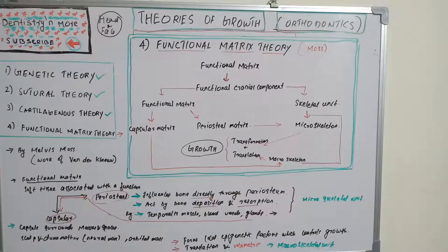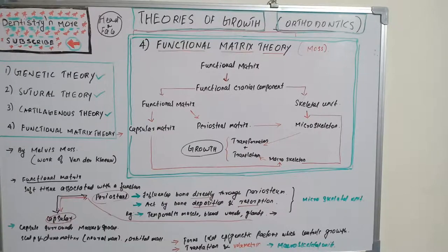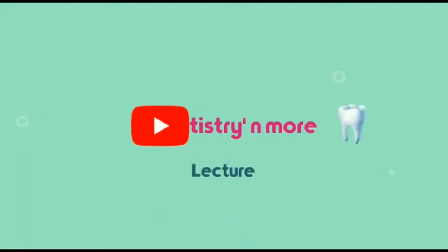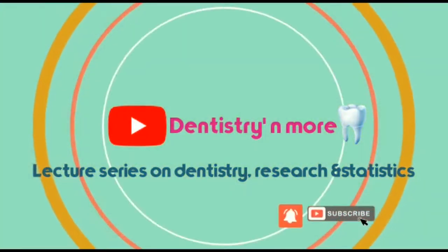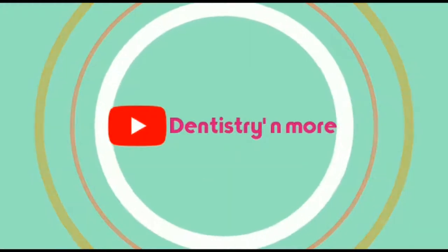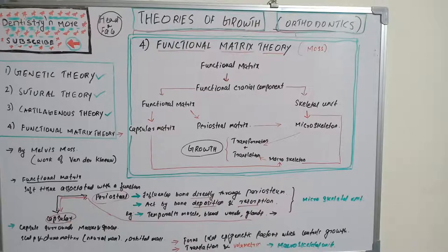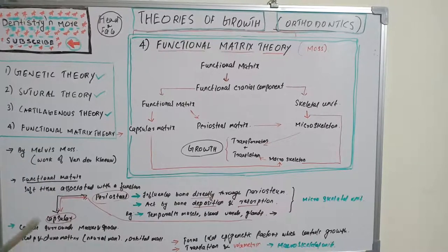We have seen what causes growth and development in each theory — the genetic involvement, the sutural involvement, and the cartilaginous involvement. Now let's move on to a different concept: functional matrix theory. In functional matrix theory, it is all about a functional cranial component. Now let's see what is the functional matrix hypothesis, also known as Moss's functional matrix theory.